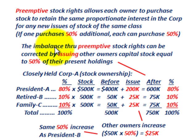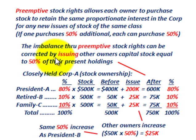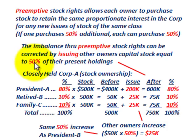The imbalance through preemptive stock rights can be corrected by issuing other owners' capital stock equal to, in this case, 50% of their present holdings. President A increased his by 50%, so the other shareholders should also be able to increase their holdings by 50%. They have to pay for the additional stock, but they must at least be given that offer through preemptive stock rights.